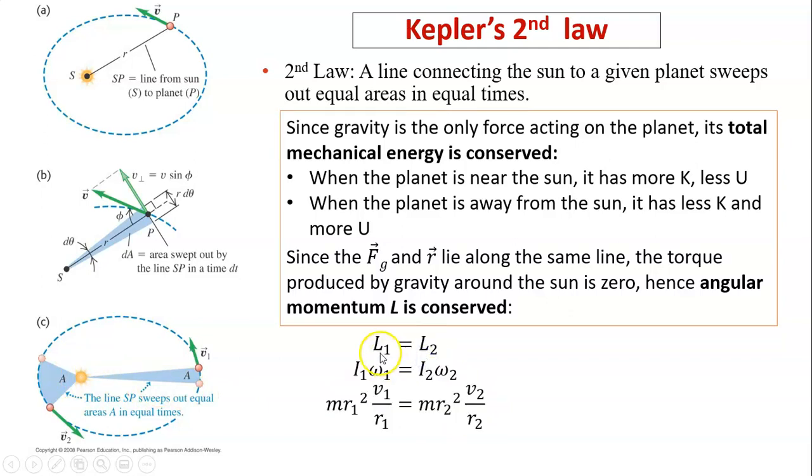Since L is conserved, so L at one equals L at two. L, angular momentum equals I omega. I for point mass is MR squared and omega equals V over R. We can simplify this expression. R1 times V1 equals R2 times V2. Basically, this is the equation for conservation of angular momentum for any planet motion or satellite motion.